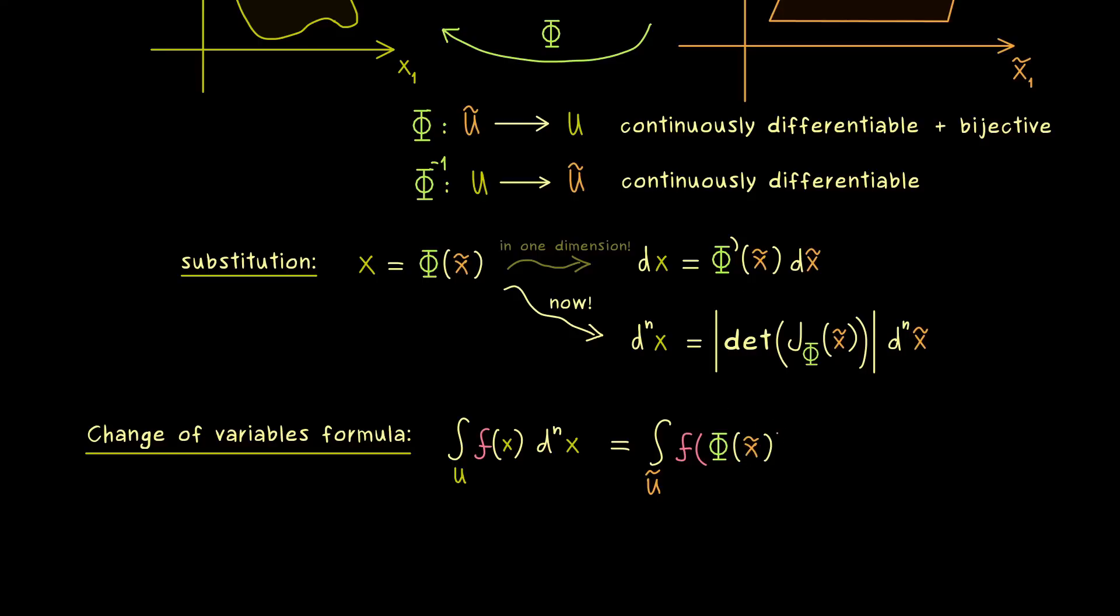And this other function you simply get by substituting x in the way we showed above. This means inside the function f we put the function Phi of x tilde. And instead of d^n x we have the absolute value of the determinant of the Jacobian of Phi times d^n x tilde. So this is the whole formula and it tells us how we can switch between the two variables x and x tilde. In fact in order to make the whole formula clearer we can also write the image of U tilde under Phi for the first integral. Obviously this is the same as U but now we have Phi on both sides in the formula.